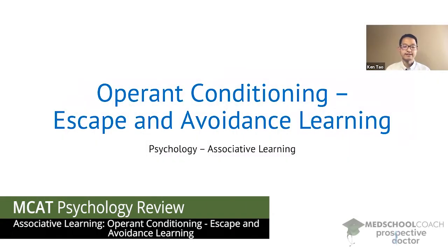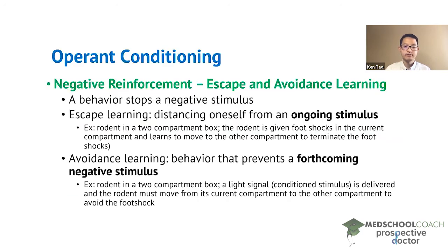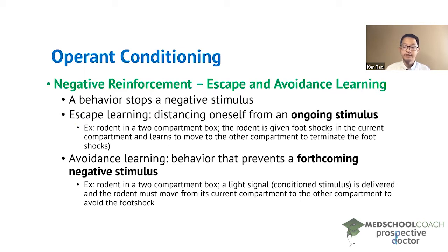In this video we're going to continue our discussion on operant conditioning by looking at escape and avoidance learning. Escape and avoidance learning is a form of negative reinforcement where the individual performs a behavior in order to stop a negative stimulus. This is reinforcement, so we are increasing or strengthening a behavior, and since this is negative, we are removing something.